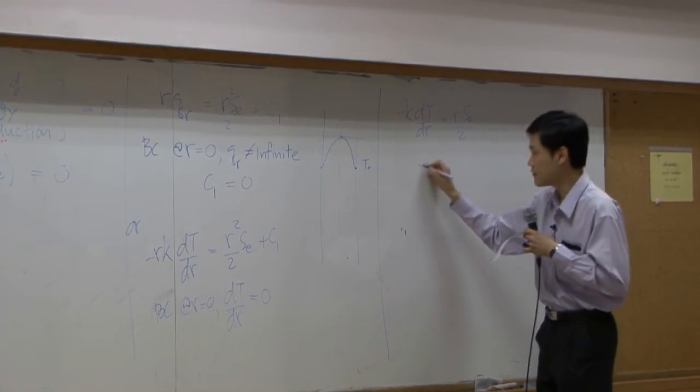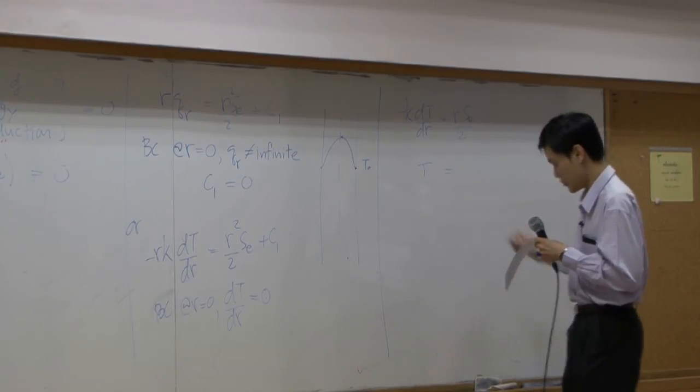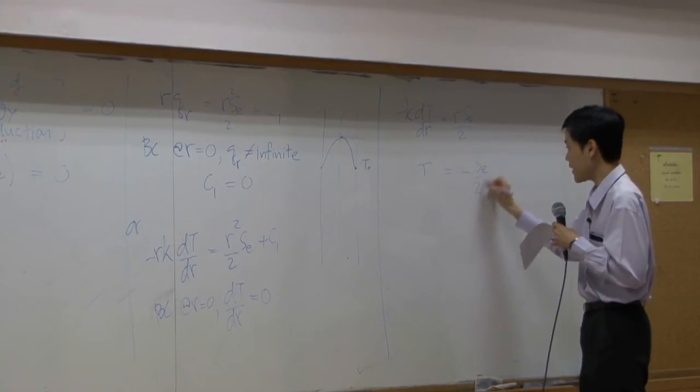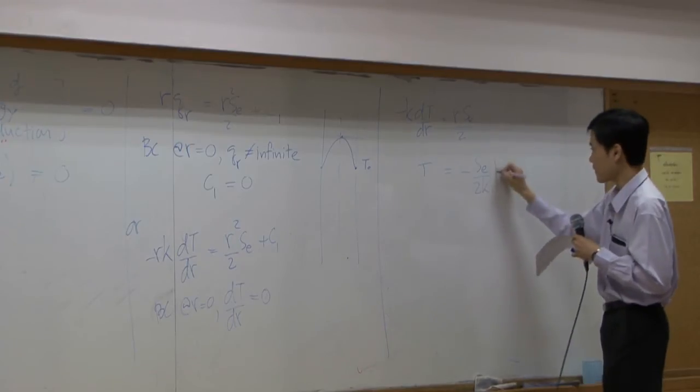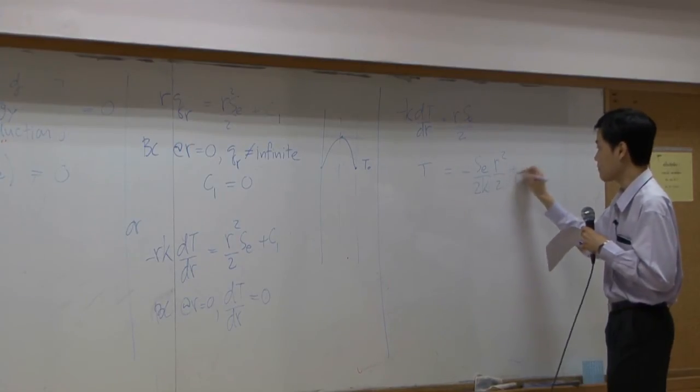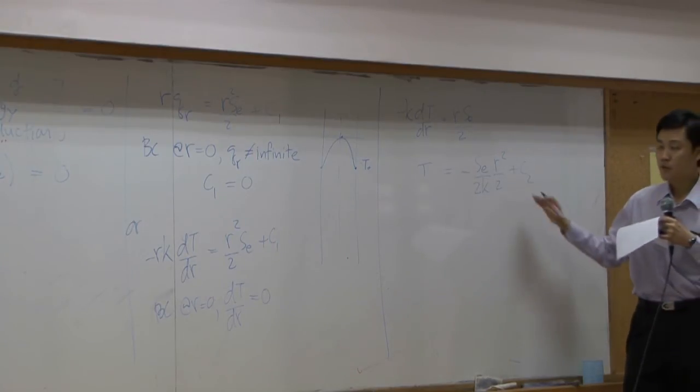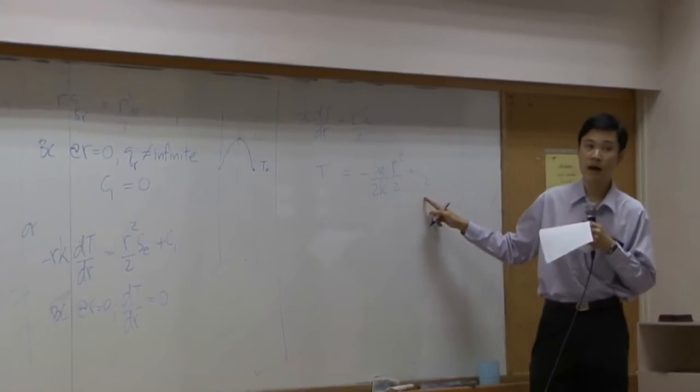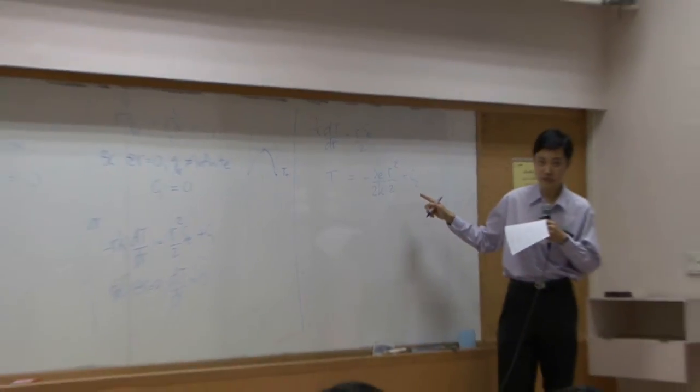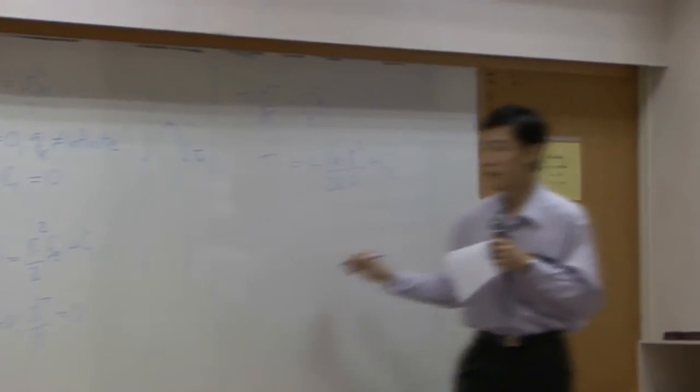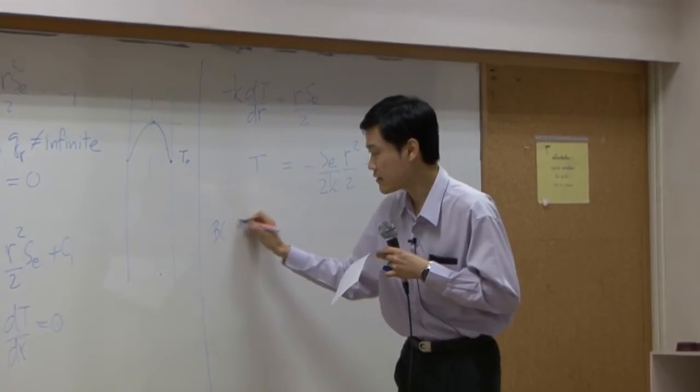you get t equal to minus se over 2k r squared over 2 plus c2. Now at this point you will need only one boundary condition regarding temperature and you already mentioned that at r